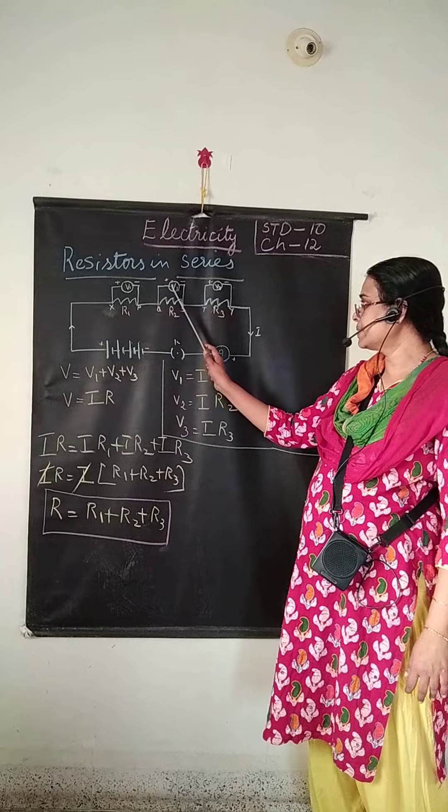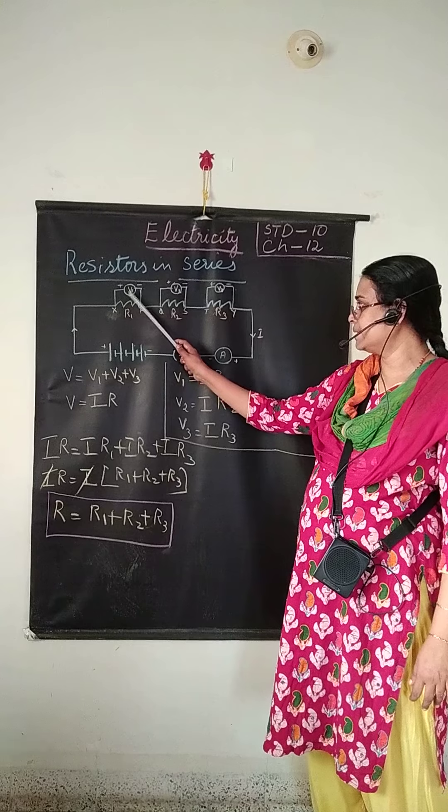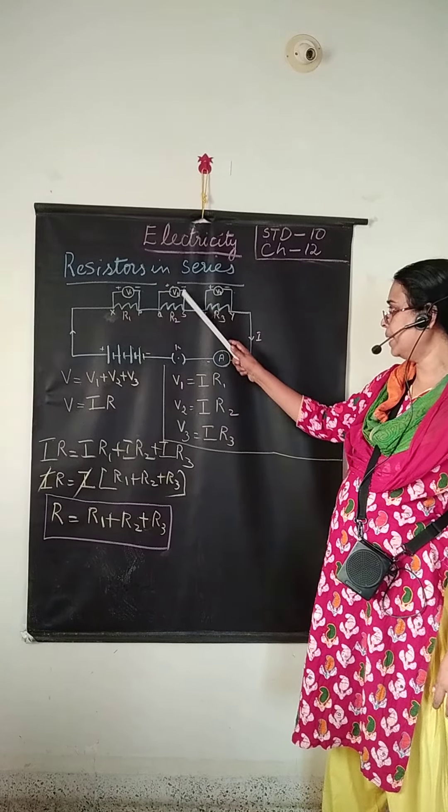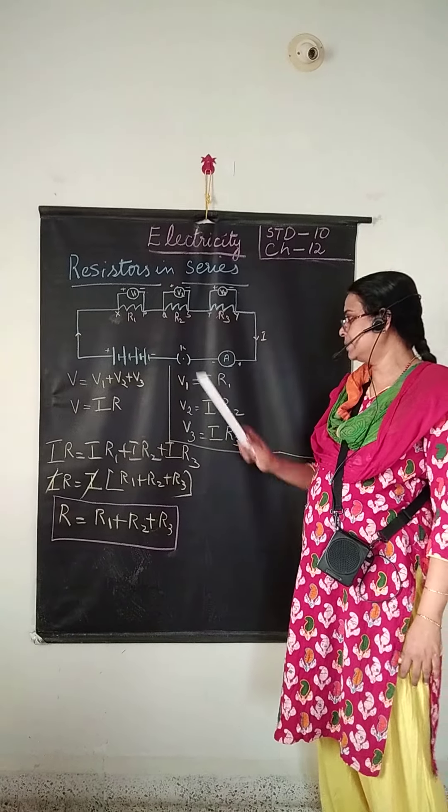Now voltmeter is connected along with each resistor. V1 is the potential difference across R1, V2 across R2 and V3 is the potential difference across R3.